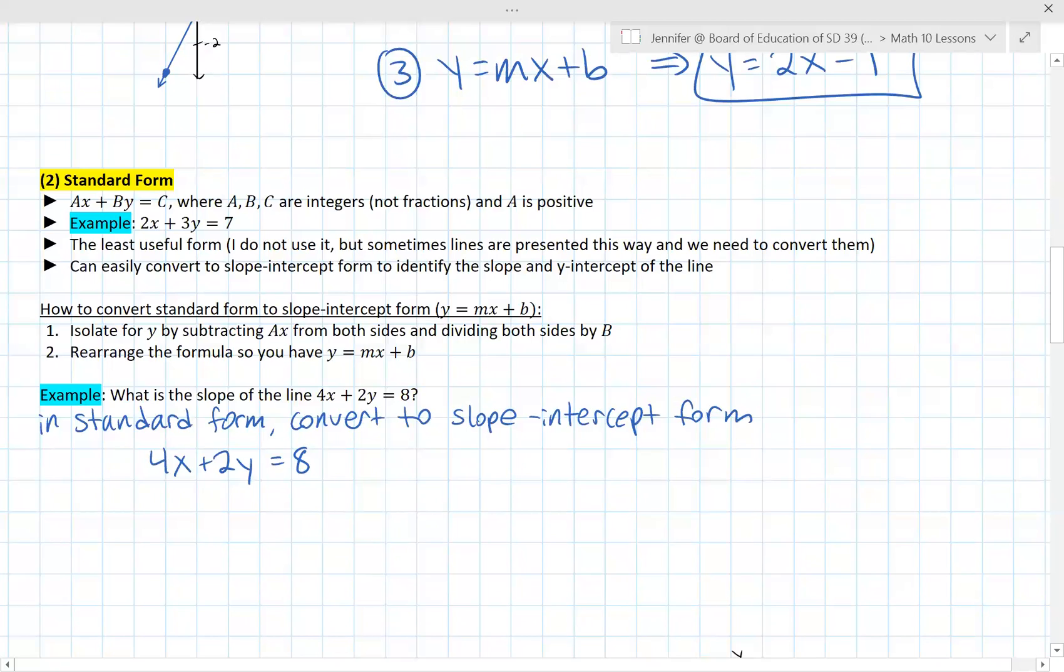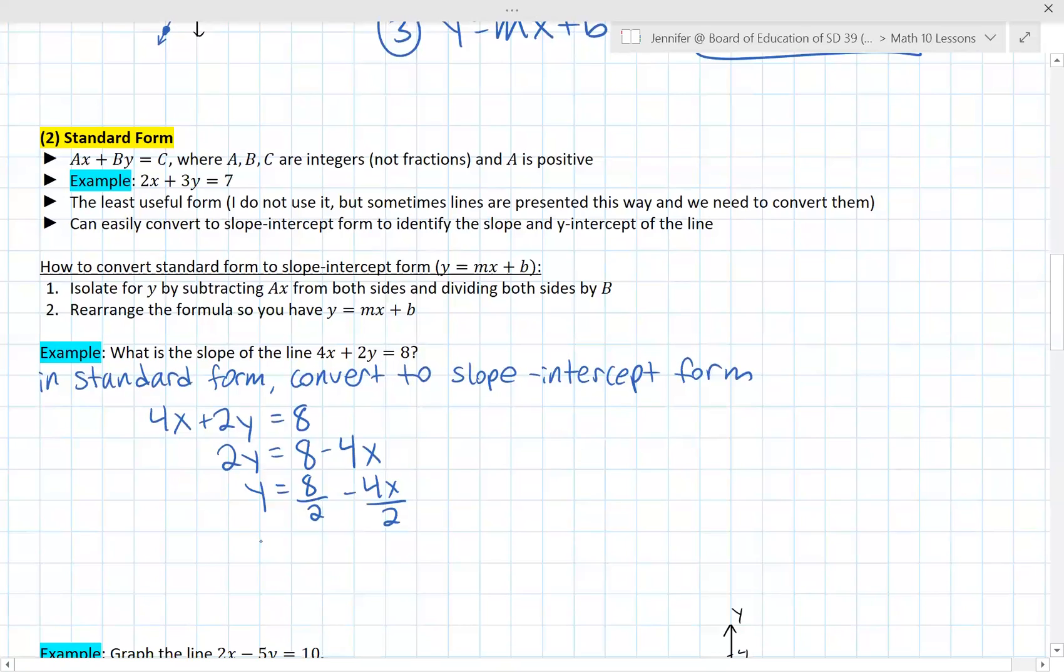Here's this first example. What is the slope of the line 4x plus 2y equals 8? So you have to be able to identify that this is in standard form right now, and we can't directly take the slope from it until we convert it to the slope-intercept form. So we take this and we convert it. We want to get y on its own. So the first step is to subtract 4x on both sides. Next, we want to divide both sides by 2 to get y on its own. So it'd be 8 divided by 2, 4x divided by 2.